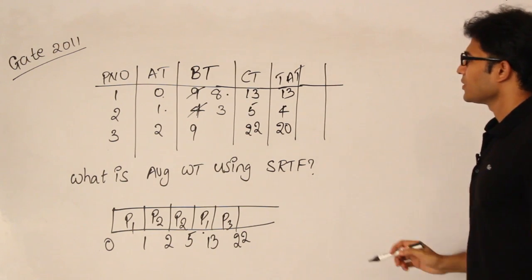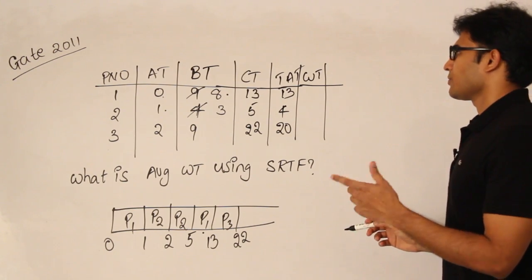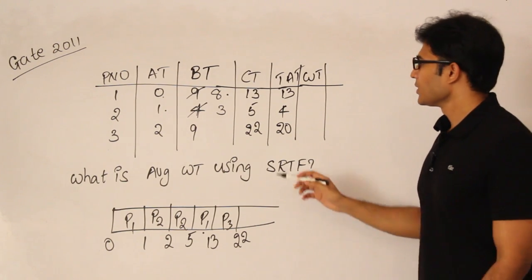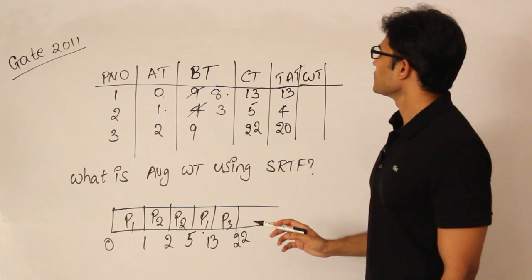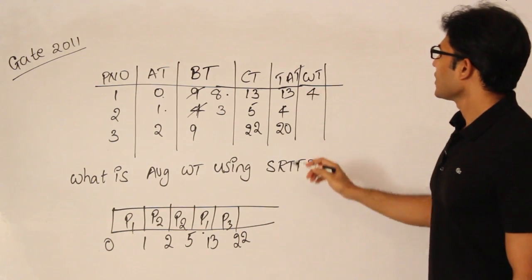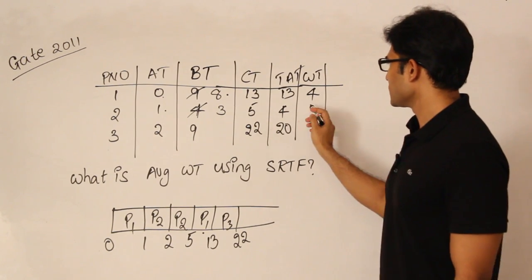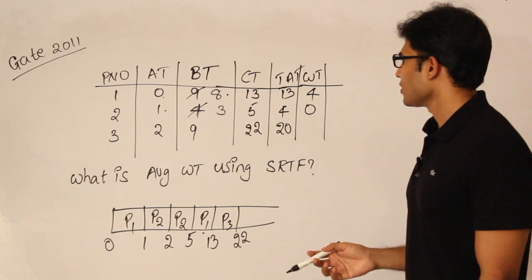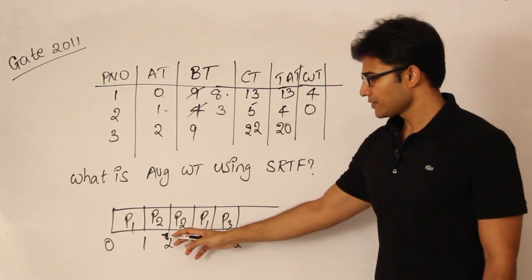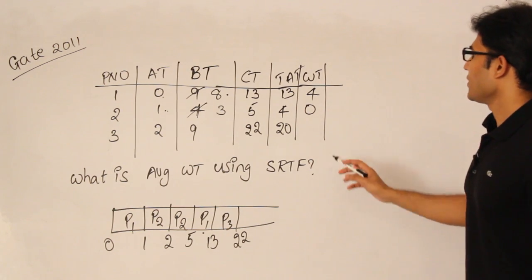After finding the turnaround time, you find the waiting time. Waiting time is turnaround time minus burst time. So 13 minus 9 is 4. The waiting time for P2 is 4 minus 4, which is 0, which means P2 didn't wait at all. Once it arrived at 1, it got scheduled and finished. For P3, 20 minus 9 is 11.